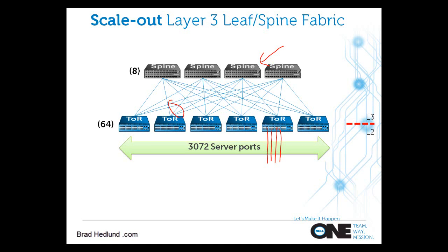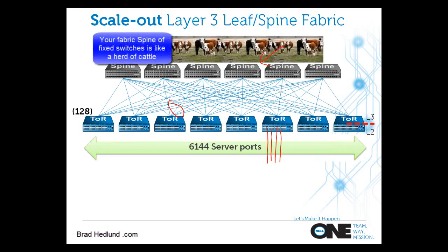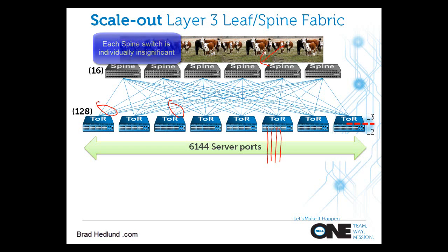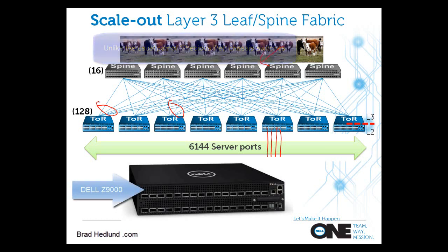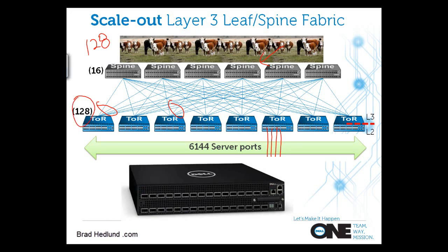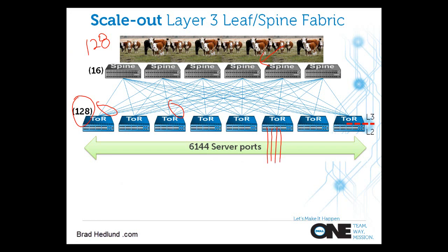I can have 16 possible uplinks out of an S4810, so I can grow this even larger to 16 spine switches — and this is where I stop, at least in this two-tier leaf-spine architecture. Each S4810 with its 16 10-gig uplinks is connected one time to each spine switch. The port count of my spine switch determines how many leaf switches I can have. If my 10-gig port count on the Z9000 is 128, and each leaf is connected one time to each spine, I can have 128 leaf switches. With 128 leaf switches each having 48 ports into the server cabinet, 48×128 equals 6,144 server ports at 3-to-1 oversubscription in a 10-gig fabric.